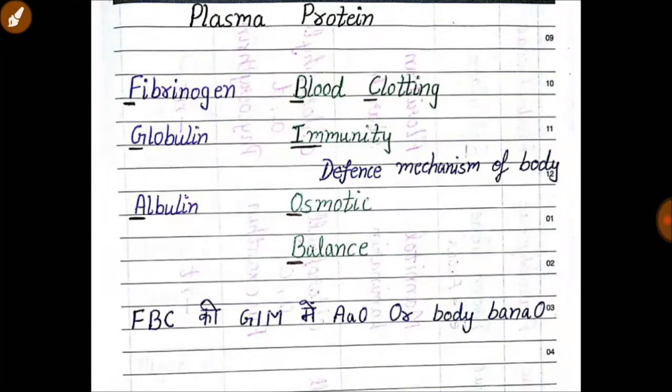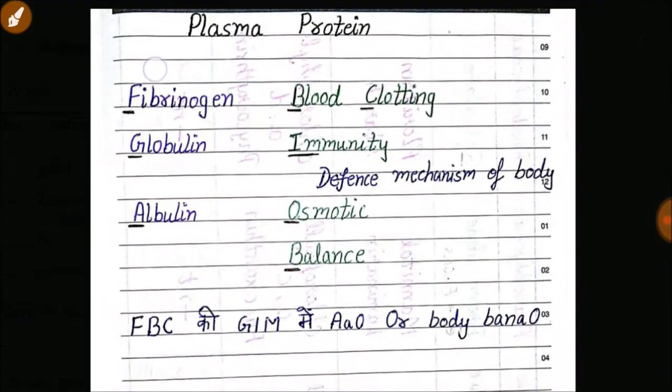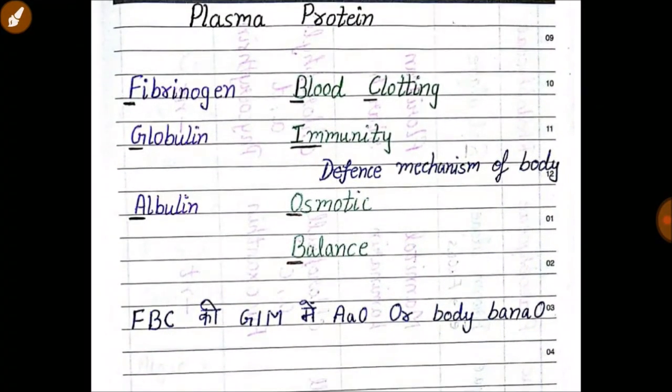Welcome to my channel, Nate Knows. Today in this video I will explain a trick with the help of which you can easily remember the functions of different components of blood — like fibrinogen, globulin, and albumin — and their specific functions, because there is so much confusion about them. We can use this trick to remember the correct function.